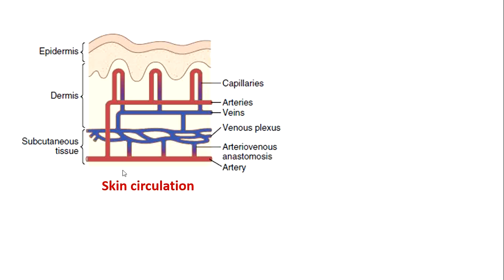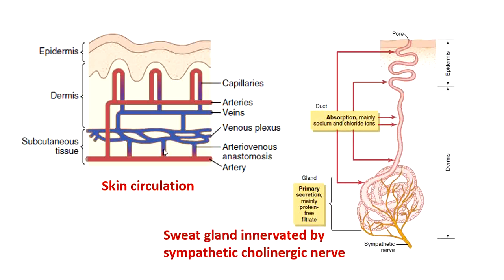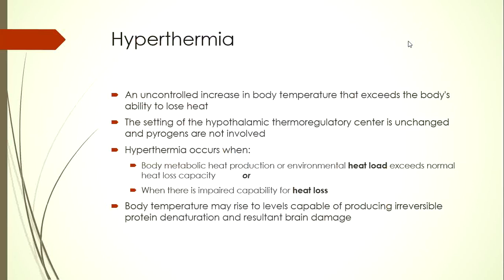The subcutaneous arteriovenous anastomoses are most important in heat dissipation: when constricted, minimal blood flows through the skin and heat is conserved; when dilated, more blood flows and heat is dissipated. The sweat gland is supplied by sympathetic cholinergic nerve fibers; activation leads to initial secretion of sweat, which is modified during transfer through the duct where important electrolytes are reabsorbed, and finally sweat is produced from the pore and evaporated to produce cooling.